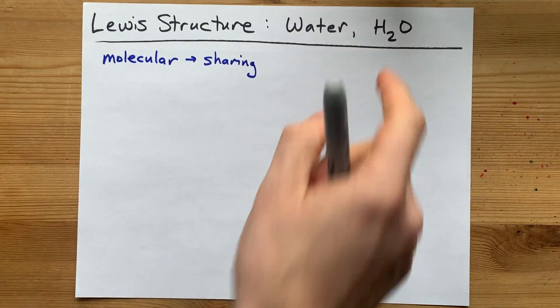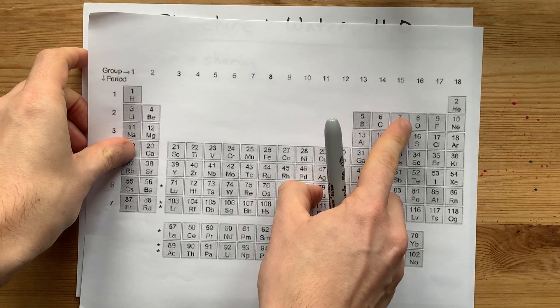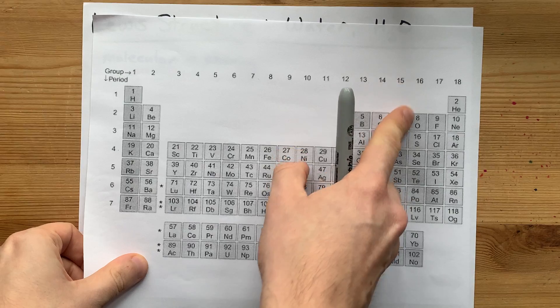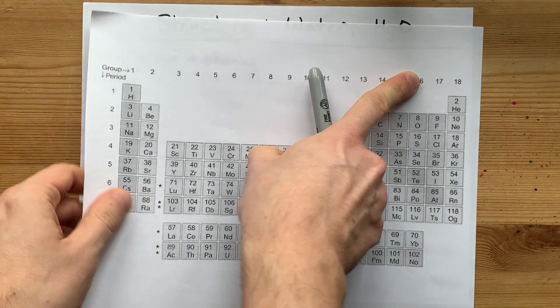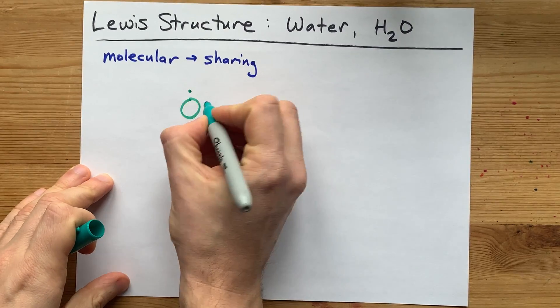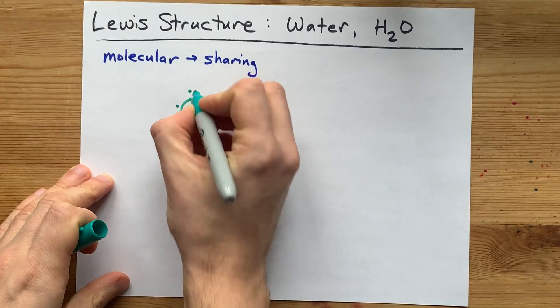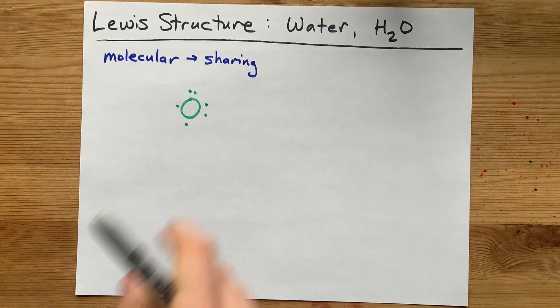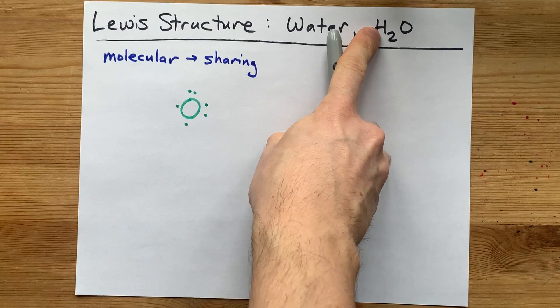...you should write out each of the atoms separately. Oxygen, 16 is its group number, so it brings six valence electrons with it. I would draw myself an O with one, two, three, four, five, six valence electrons. And I need two hydrogens.